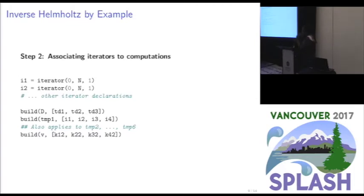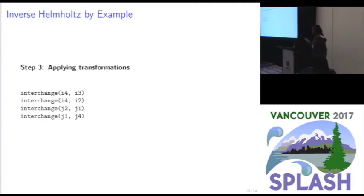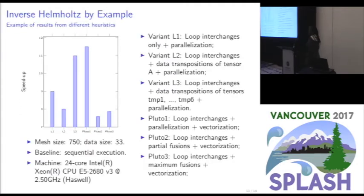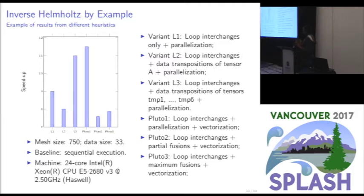Since we want to apply transformations to these loop domains, we associate them with a set of iterators representing the loop iterator names. We use the construct 'build' to associate a tensor with a list of iterators, and 'build' implicitly constructs a loop respecting the pattern of the tensor operator. When we have this list of iterators and know how they're used, we can apply transformations such as a succession of loop interchanges. For instance, variant L1 proposes to deal with column-major accesses via loop interchanges and parallelization on the mesh loop using OpenMP.